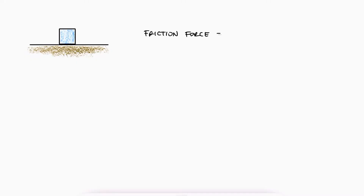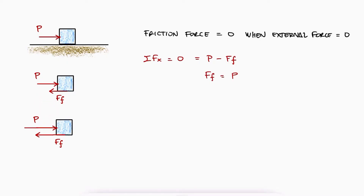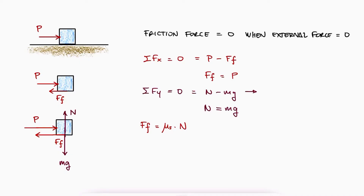For a box on a horizontal surface, the friction force is zero if no external horizontal force is being applied. As soon as an external force appears, if the box is still static, a reaction friction force with opposite direction to the external force has the same magnitude as that external force. The external force can keep increasing until the friction force reaches a value of mu s times N, where N is the normal force equal to mg. When the external force is higher than this, the friction force cannot increase anymore and therefore the box will be subjected to a horizontal acceleration.